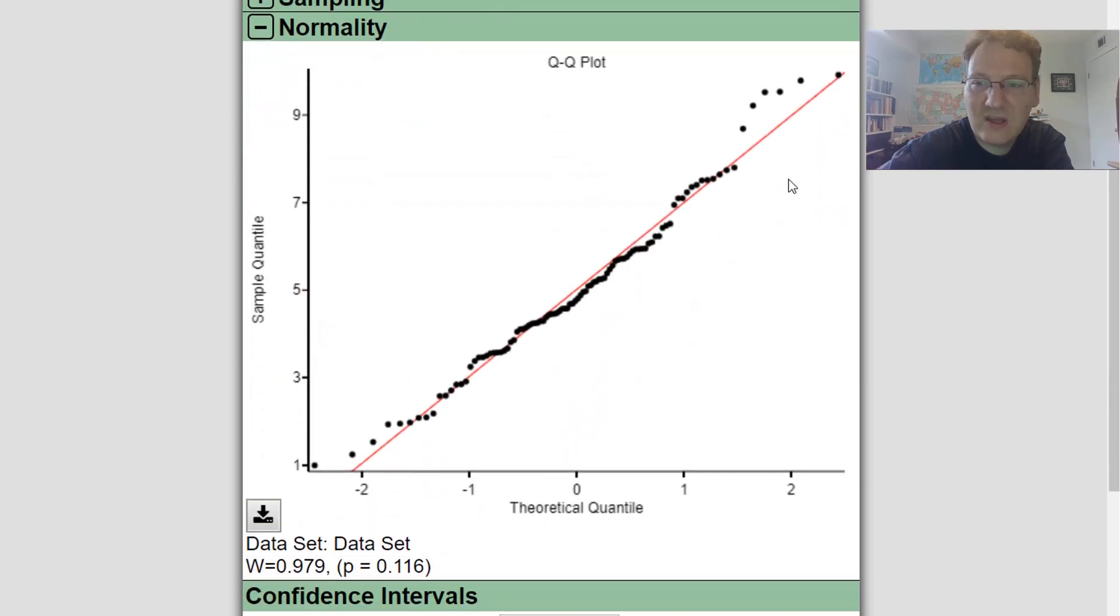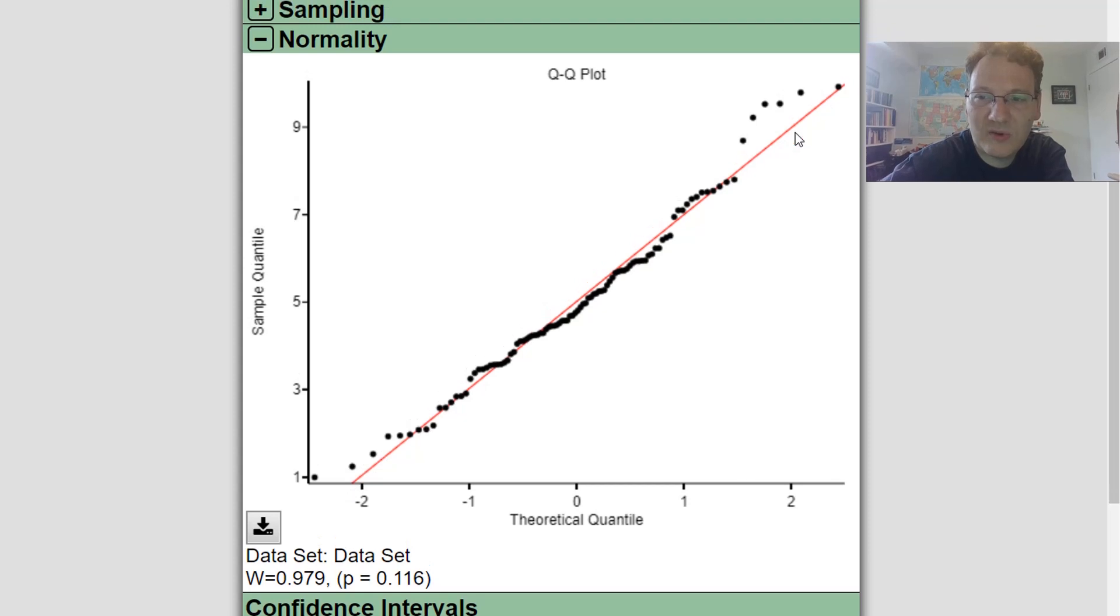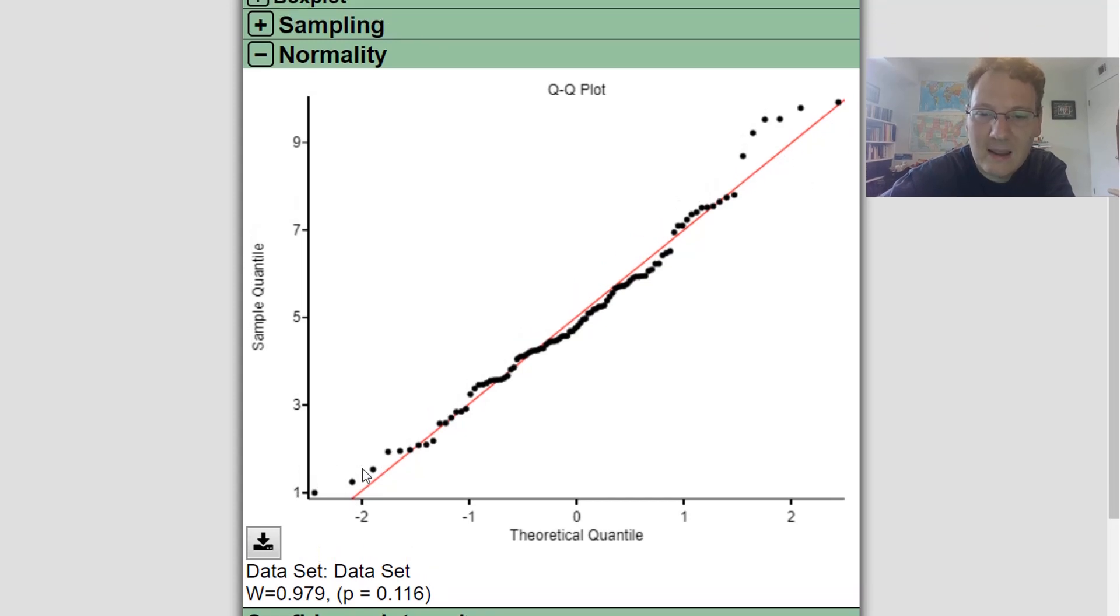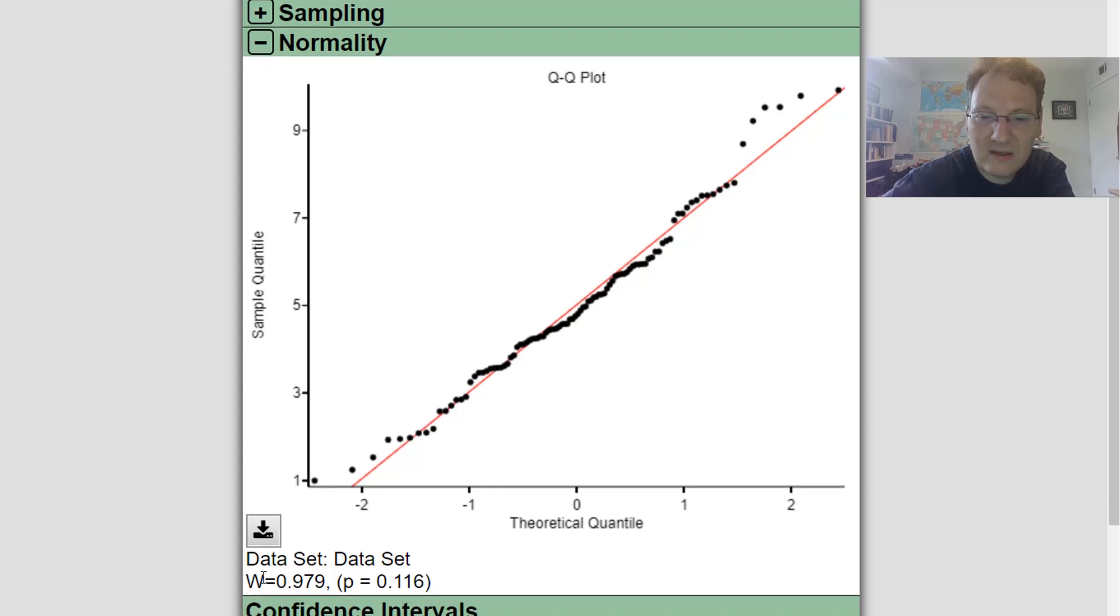Okay, so this is the kind of QQ plot you would see when your data is normally distributed. It is much closer to the line. It goes a little bit over, it goes a little bit under here and there, but it's not as extremely bad as it was before.